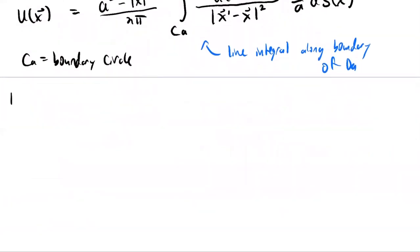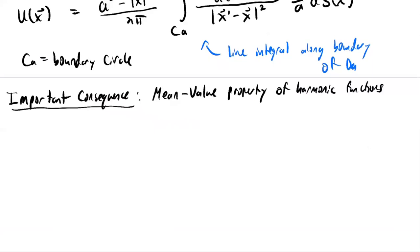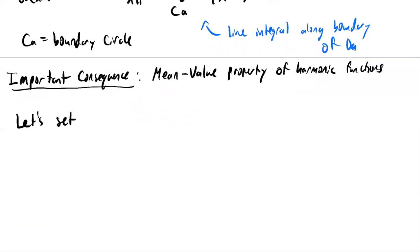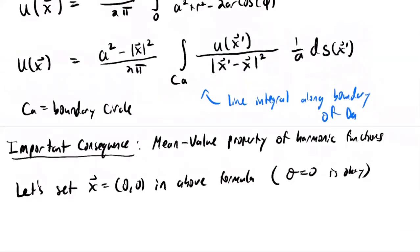Now we want to discuss some important consequences. In particular, we're going to discuss the mean value property of harmonic functions. Let's set the vector x to be the origin in the above formula. Note that theta equals zero is valid for the origin when described in polar coordinates, so the formula we have is valid.